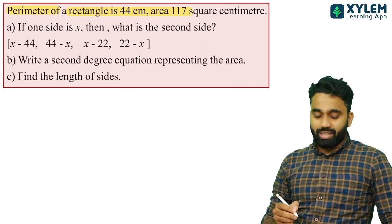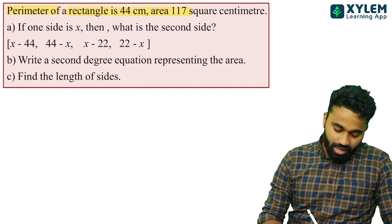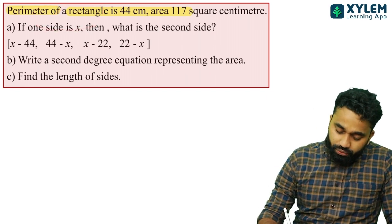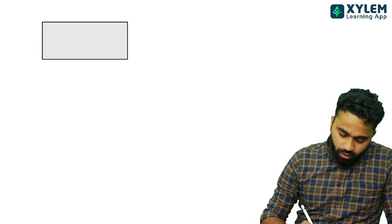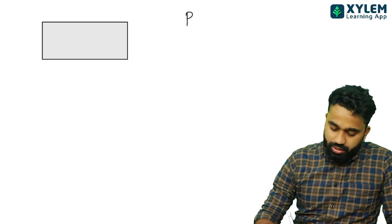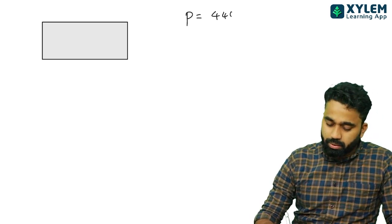When I talk about this, I will show you the same thing. The perimeter of a rectangle is 44 cm.